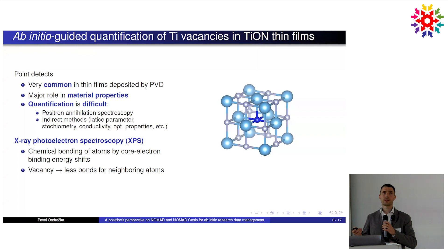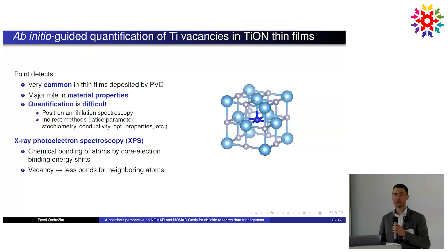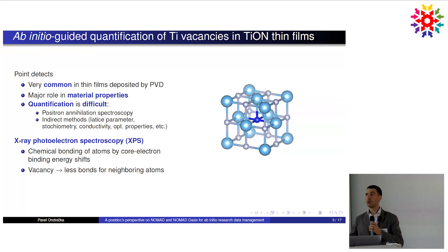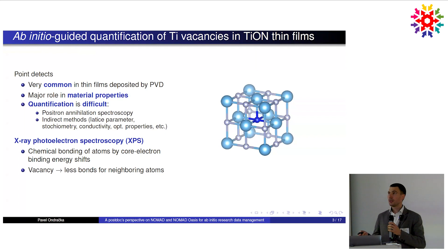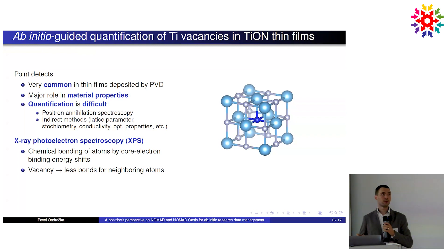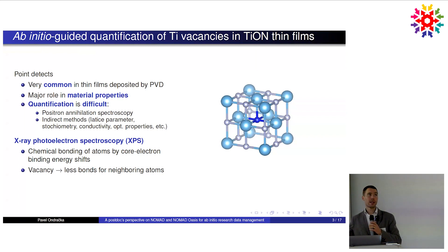Mostly you can get only some indirect estimates from the lattice parameter or the composition from the stoichiometry, and so on. We were thinking maybe we can do a bit better, because X-ray photoelectron spectroscopy is the technique you usually use to quantify the bonding environment of atoms — like the oxidation state and so on.